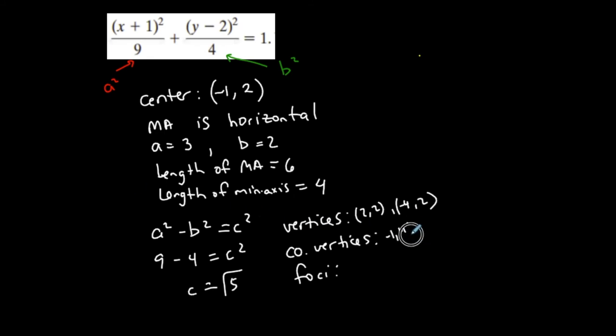So negative 1, 4 and negative 1, 0. Notice that the x-coordinate stayed the same and the y-coordinate is the one that changed because the minor axis is vertical because the major axis is horizontal. And since I'm moving up and down, the y-coordinate is affected by 2. So 2 plus 2 is 4. 2 minus 2 is 0. So that matches.